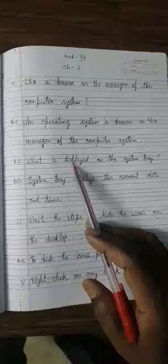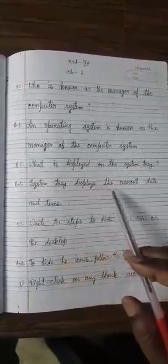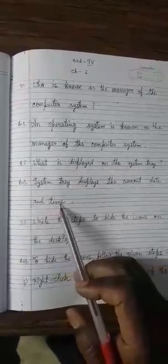Number 2: What is displayed on the system tray? Answer: The system tray displays the current date and time.